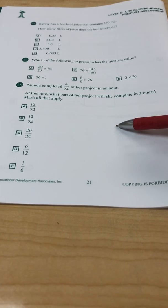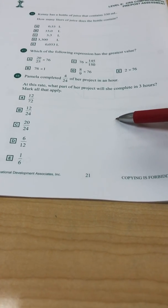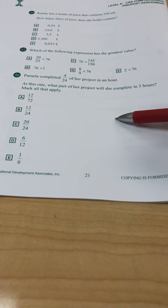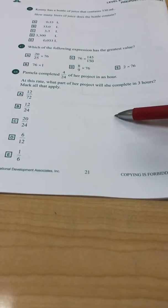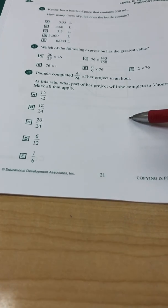I want to look at 48. It says, Pamela completed 4/24ths of her project in an hour. At this rate, what part of her project will she complete in 3 hours? Mark all that apply.